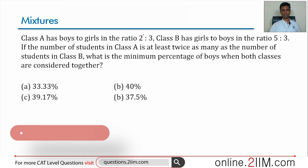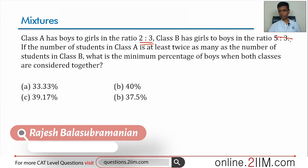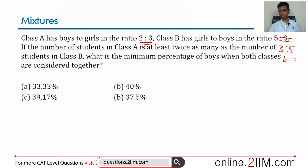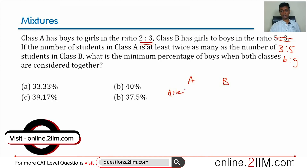Class A has boys to girls in the ratio 2:3. Class B has girls to boys in the ratio 5:3, so written as boys to girls this becomes 3:5, just to maintain consistency. The number of students in class A is at least twice as many as the number of students in class B — so A:B is at least 2:1.